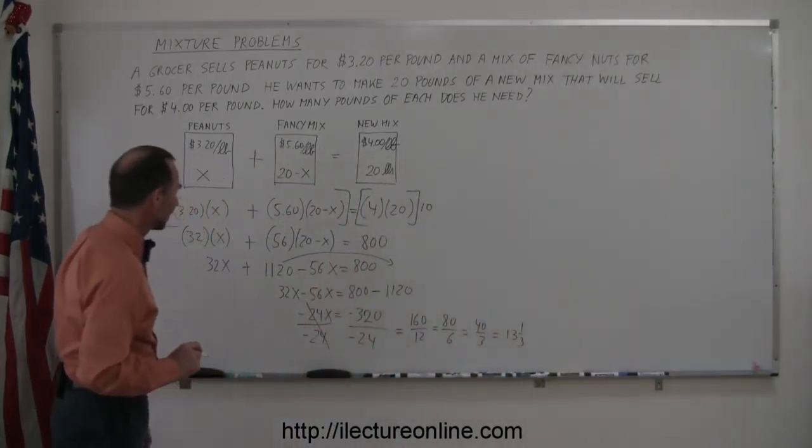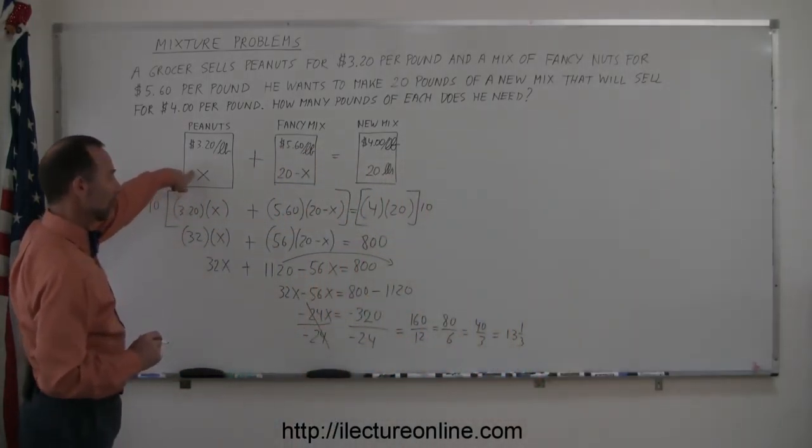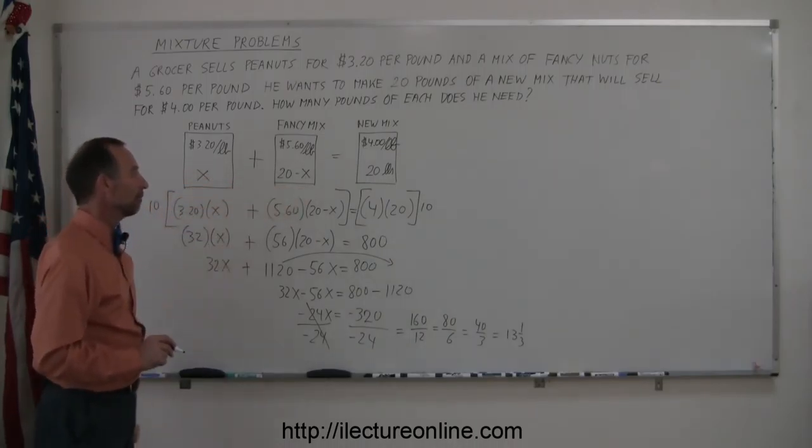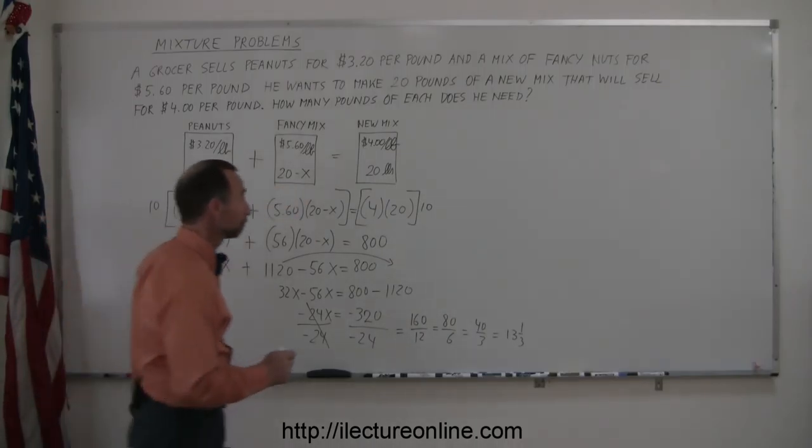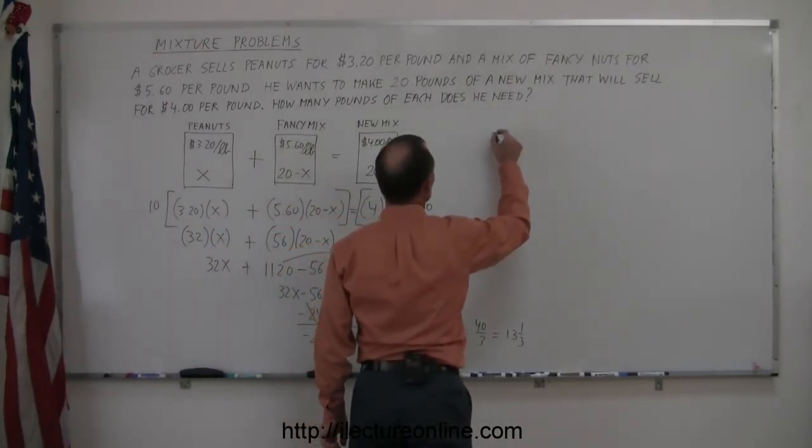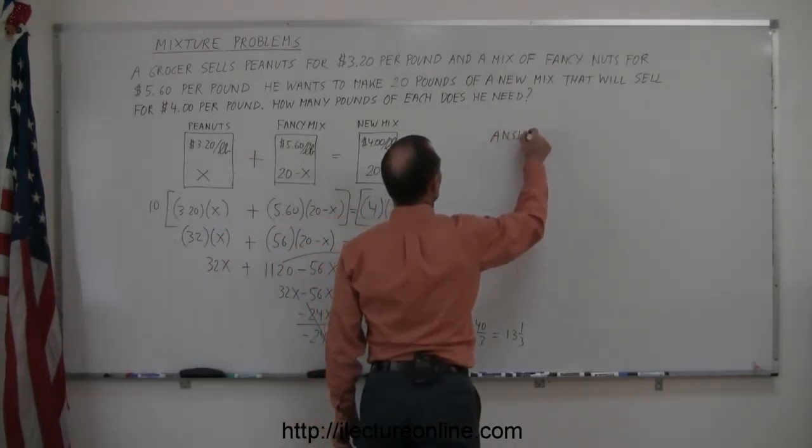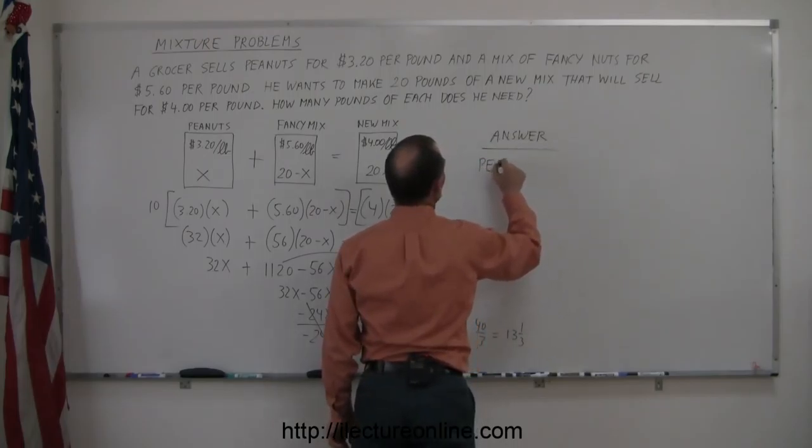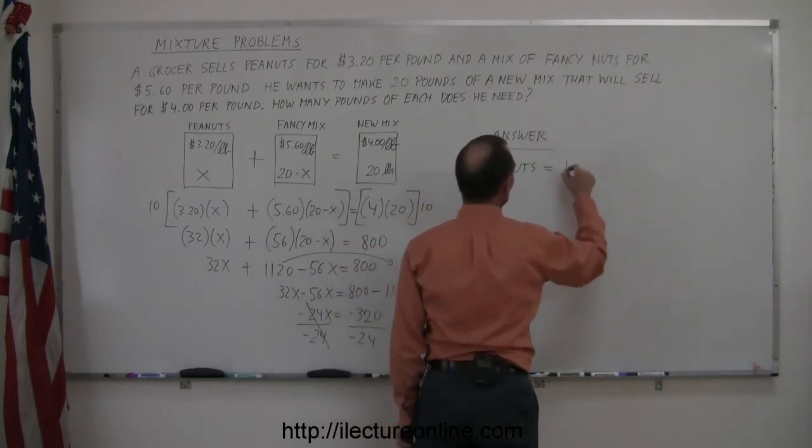That means we need 13 and a third pounds of the peanuts, and the remainder 20 minus that for the fancy mix. So the answer for the peanuts, we will need 13 and a third pounds.